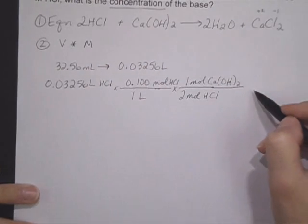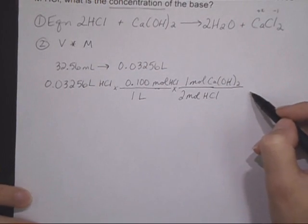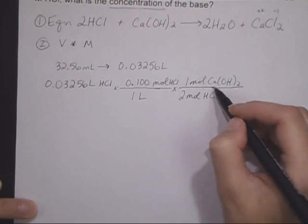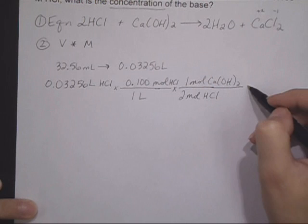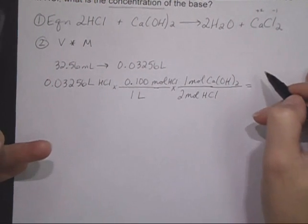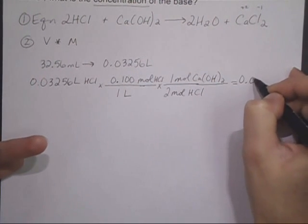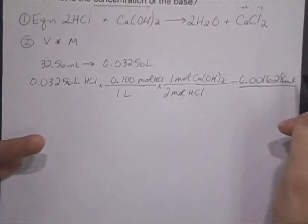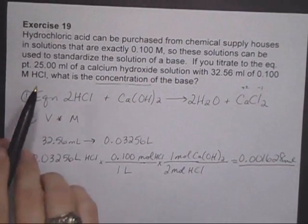And it asks us, in this case, for the concentration of the base. So I was trying to decide whether or not I needed to go any further to get grams, but I don't. I just need moles because in the end, I need moles per liter. So if I multiply those values, 0.03256 times 0.1 divided by 2 gives me 0.001628 moles.